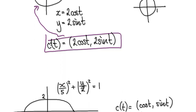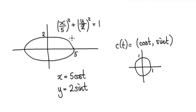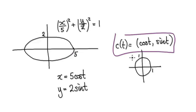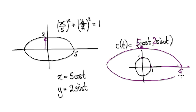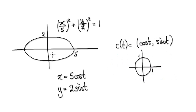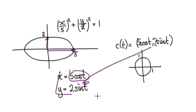Now if you want an ellipse — say semi-axes of 5 and 2 — start out with your unit circle. If you stick a 5 in front of the cos term, it's going to stretch it to 5 in the horizontal direction. And if you stick a 2 in front of the sine term, it will stretch it up to 2 in the vertical direction. So you start with the unit circle: if you want a length of 5, stick a 5 in front; if you want a height of 2, stick a 2 in front. That gives you the parametric equations for the ellipse.